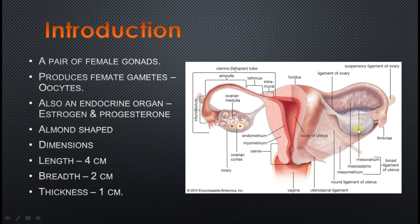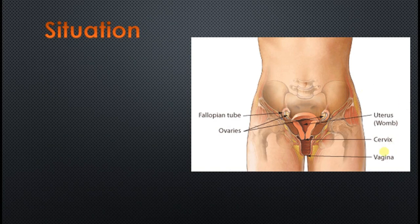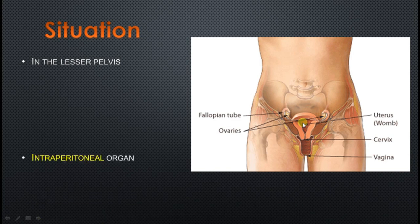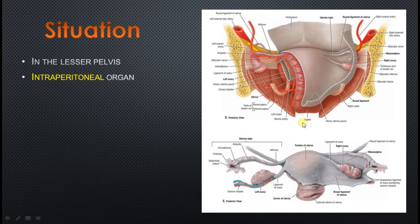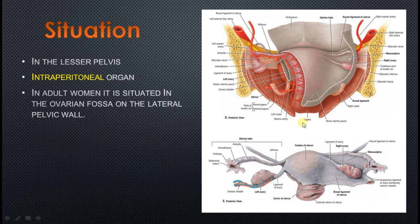The upper end is called the tubal end, which is related to the uterine tube, and the lower end is called the uterine end. The upper end is directed somewhat upwards and laterally. In adults it is situated in the lesser pelvis, immediately below the inlet of the pelvis, just below the pelvic brim. In children, it is situated above the pelvic brim and has not yet descended into the lesser pelvis.